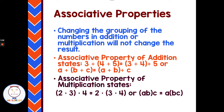The associative property has to do with changing how things are grouped together, either with addition or with multiplication. The associative property of addition: 3 plus (4 plus 5) gives the same result as (3 plus 4) plus 5. These are easy to spot because you'll have different numbers inside the grouping symbols on one side of the equation than on the other. For multiplication: (2 times 3) times 4 equals 2 times (3 times 4). Remember, we associate in groups — grouping things together relates to the word associative.